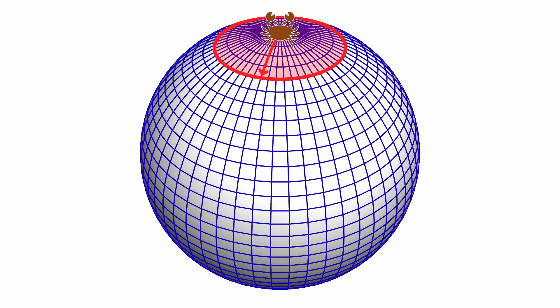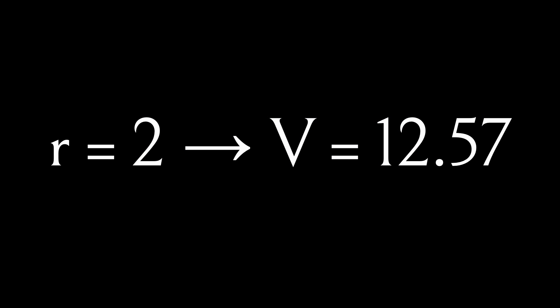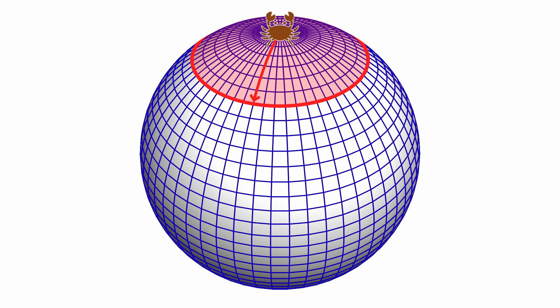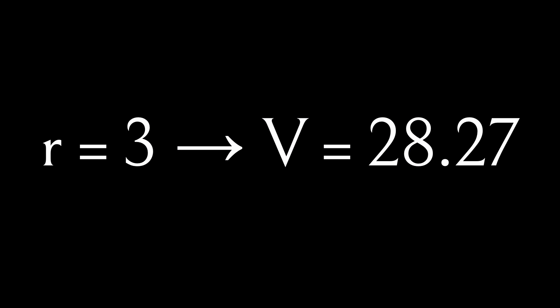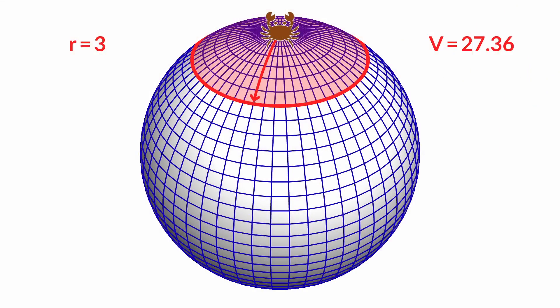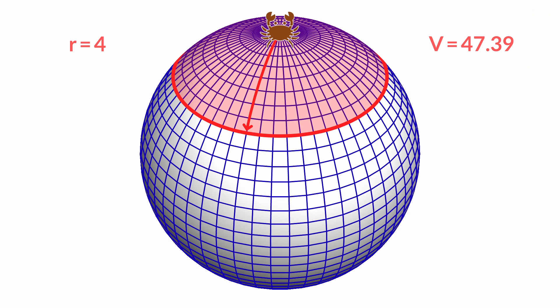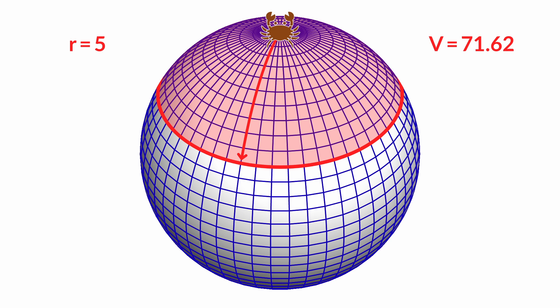Next it moves r = 2 crab lengths in every possible direction, expecting 12.57 crabs worth of space, but finds it has covered 12.38 — a 1.5% discrepancy. Something's not right. The crab presses on, moving r = 3 crab lengths. Instead of 28.27, it covers 27.36 crabs worth of space, fully 3% less than expected. Moving r = 4 crab lengths, it covers 47.39 — over 5% less. Moving r = 5 crab lengths, it covers 71.62 crabs worth of space, over 8% less than predicted.